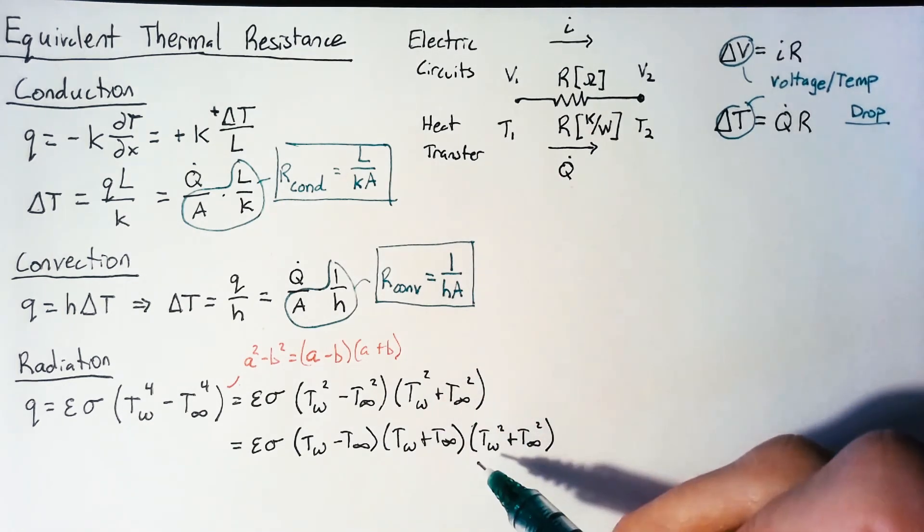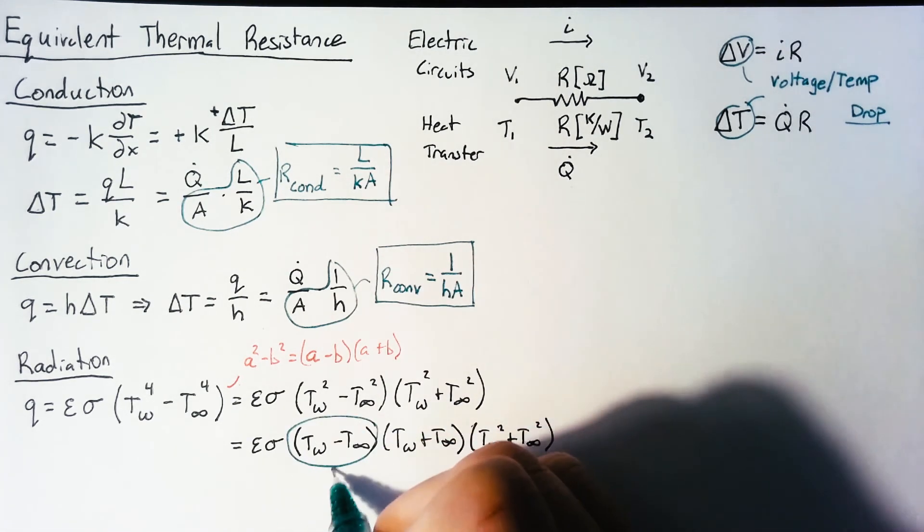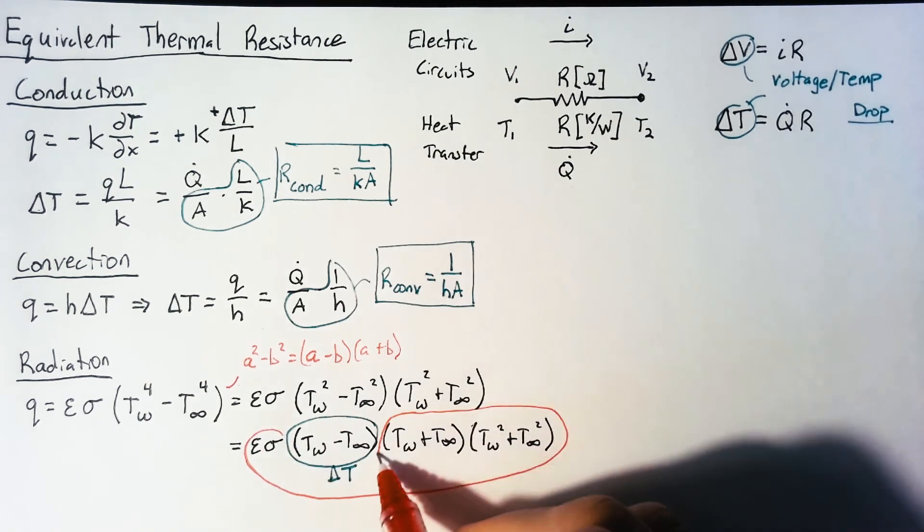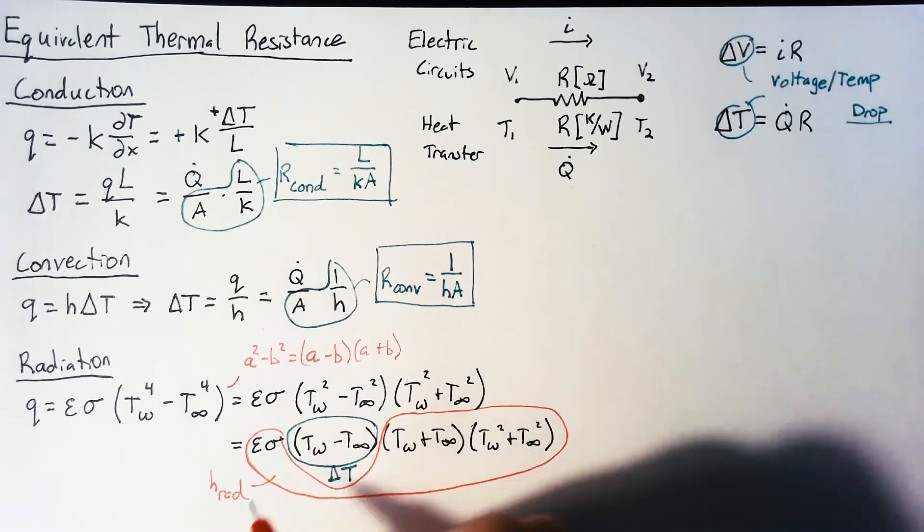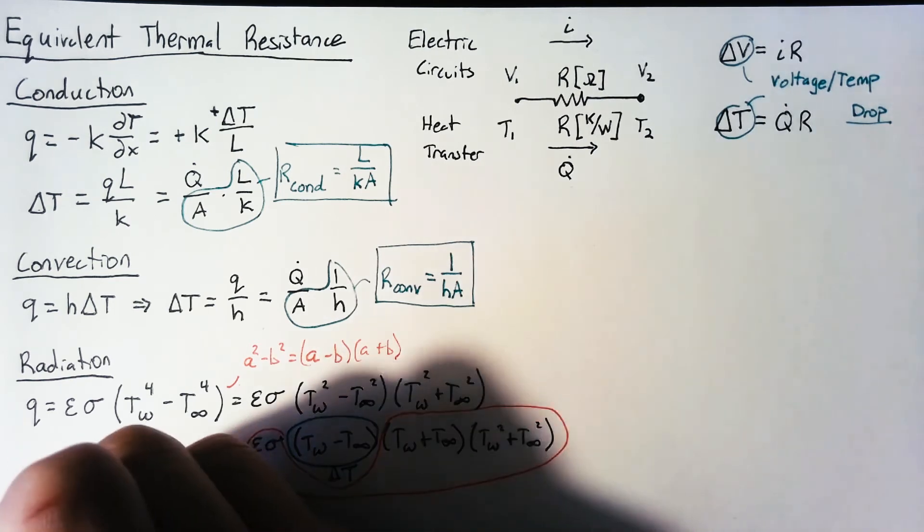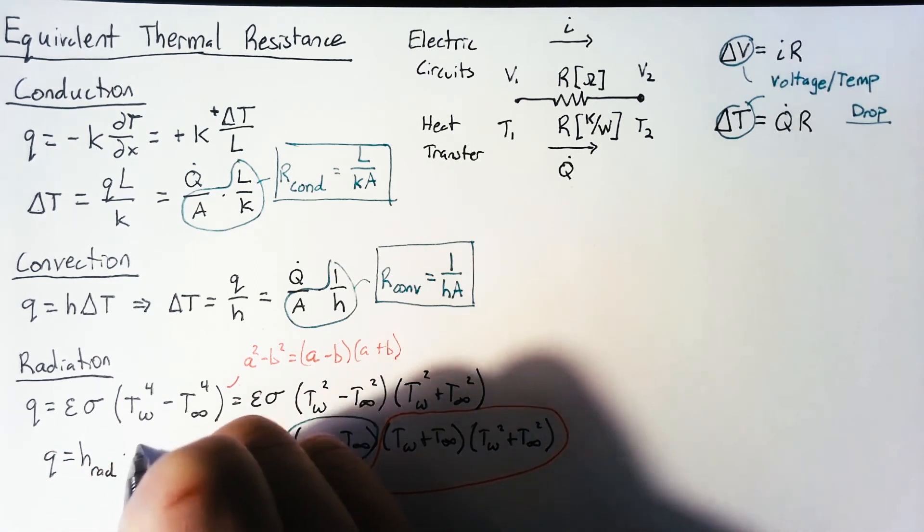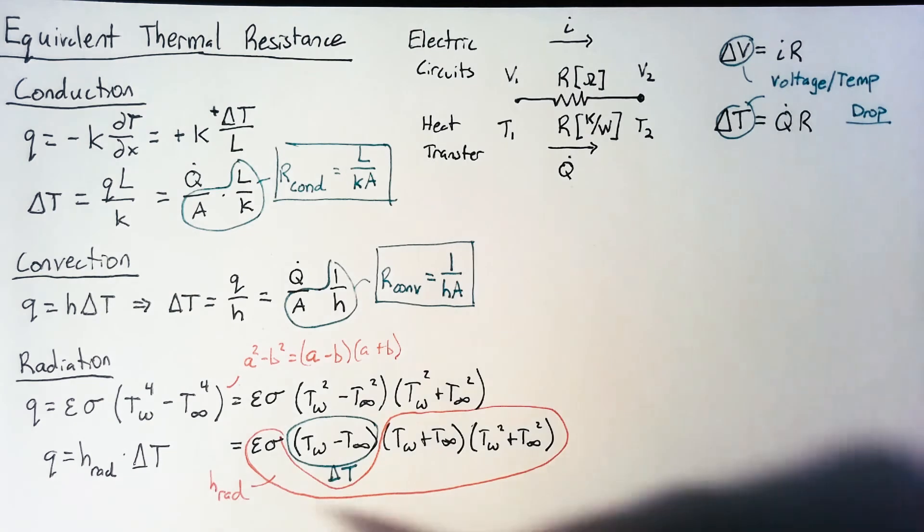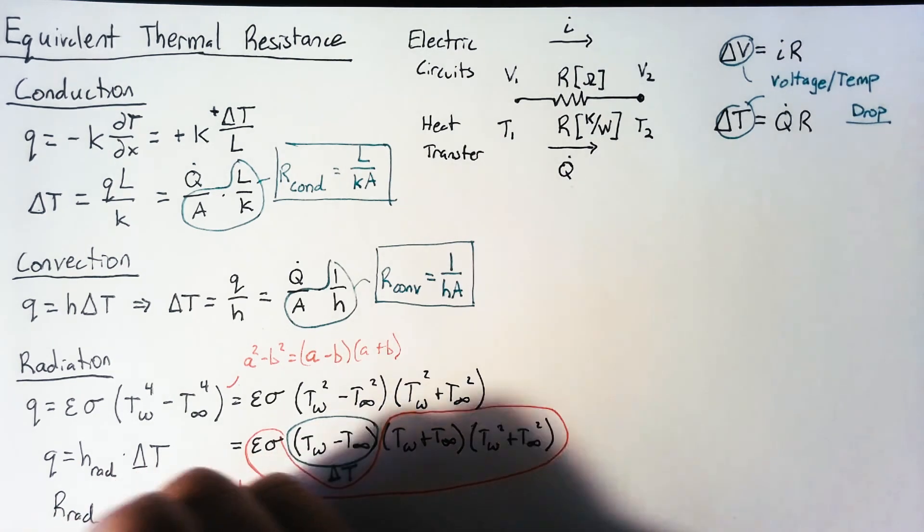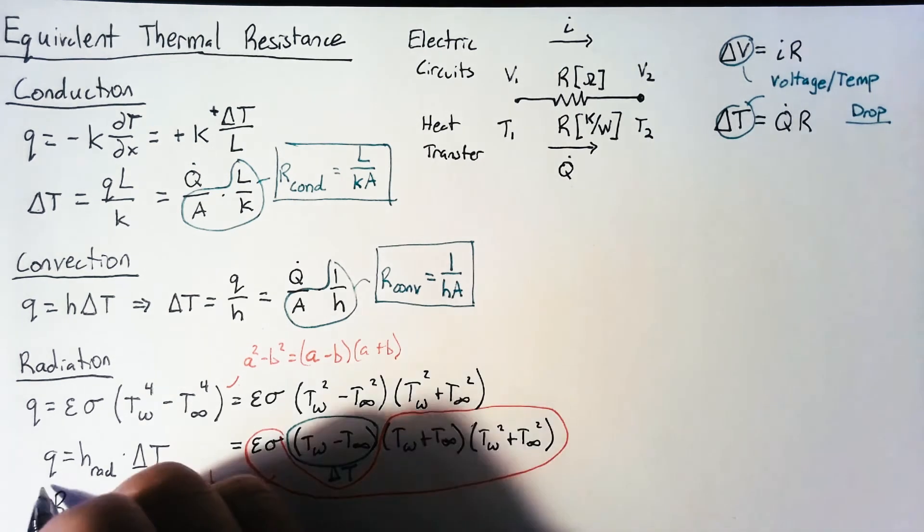But once we get down to this point, we can say that this term is our delta T, and everything else is what we call our radiation heat transfer coefficient. So with this terminology in hand, we can go back and rewrite our Q back here as our radiation heat transfer coefficient multiplied by delta T. Now this looks exactly like our convection term, which means that we can write our radiation resistance as one over our radiation heat transfer coefficient multiplied by that area.